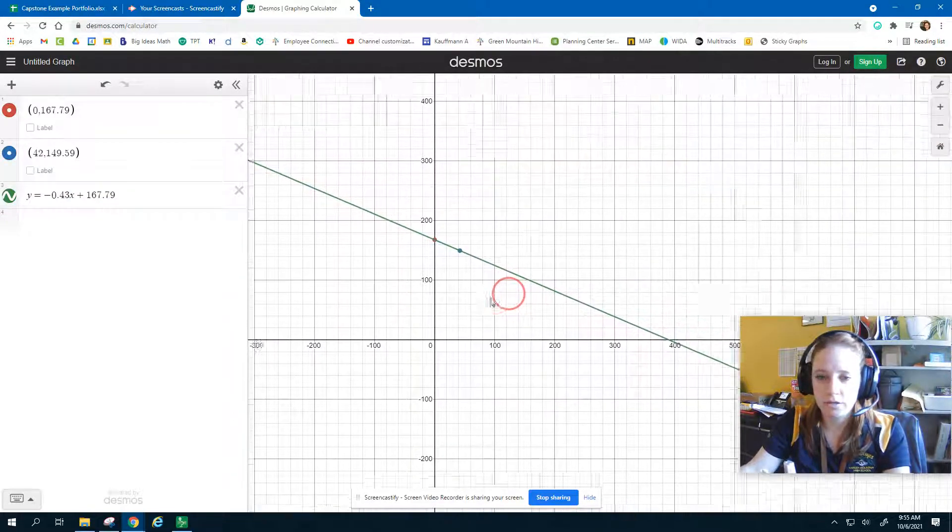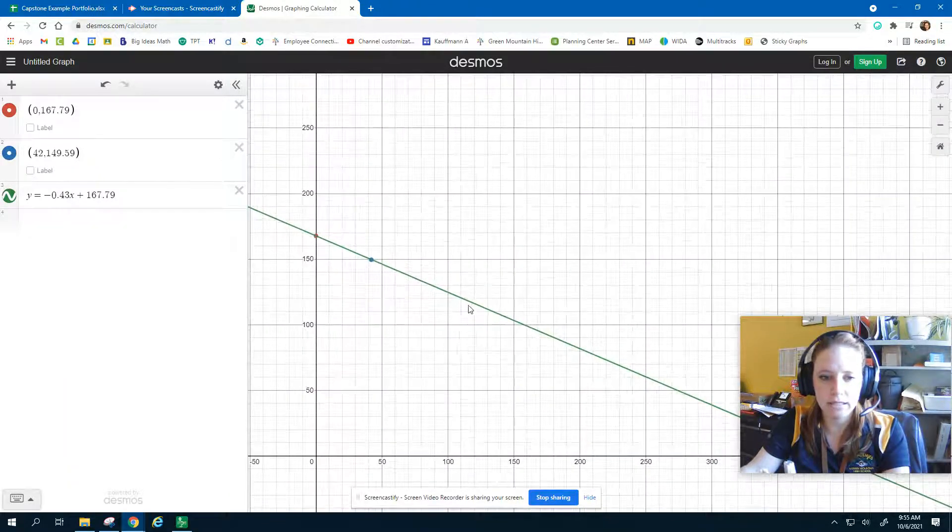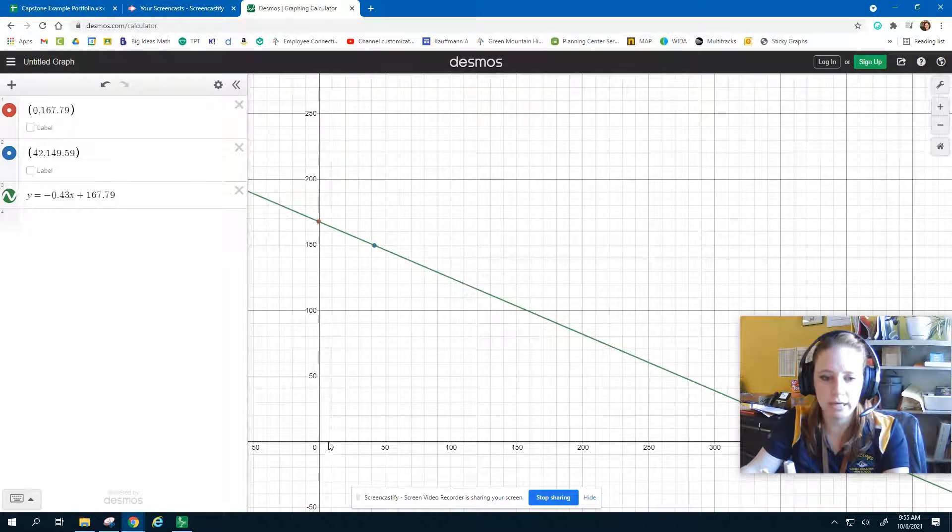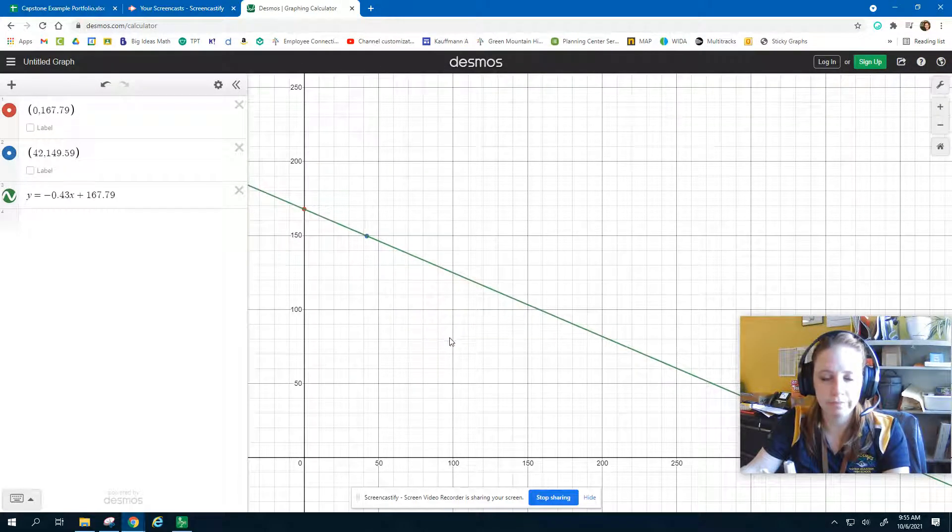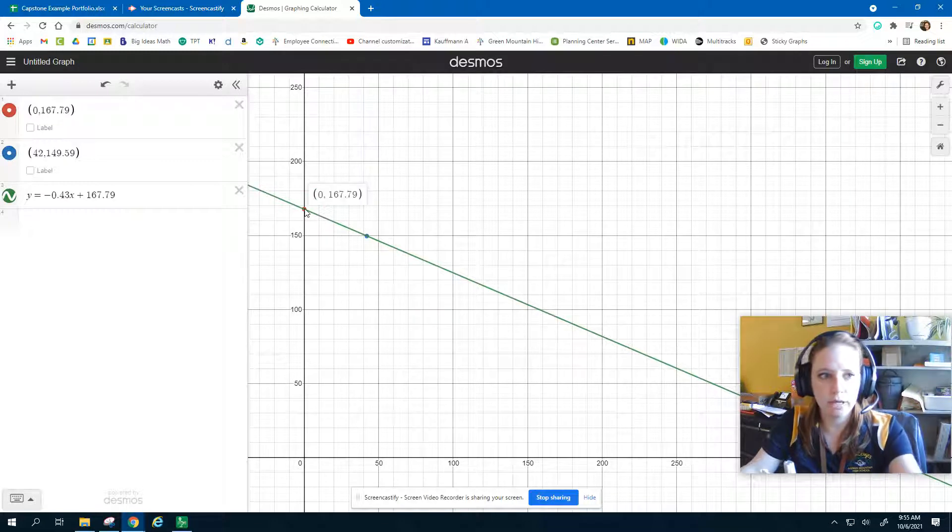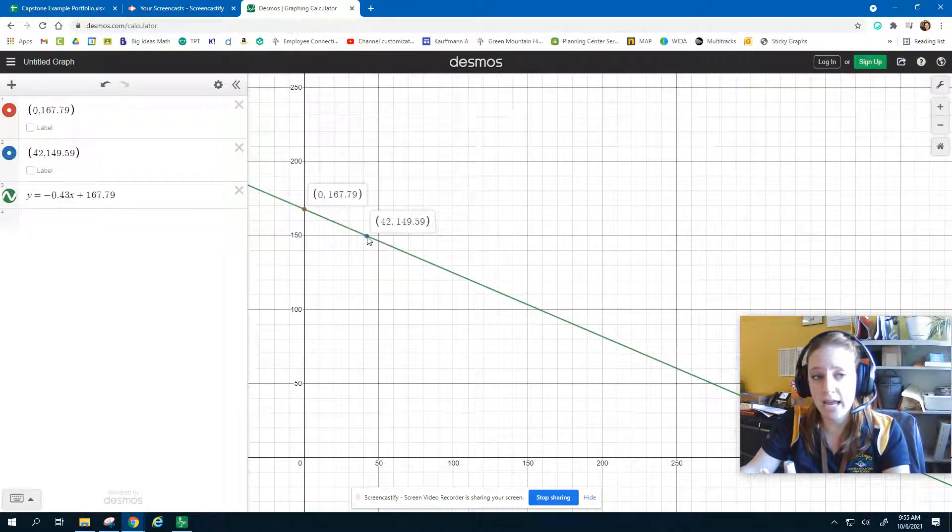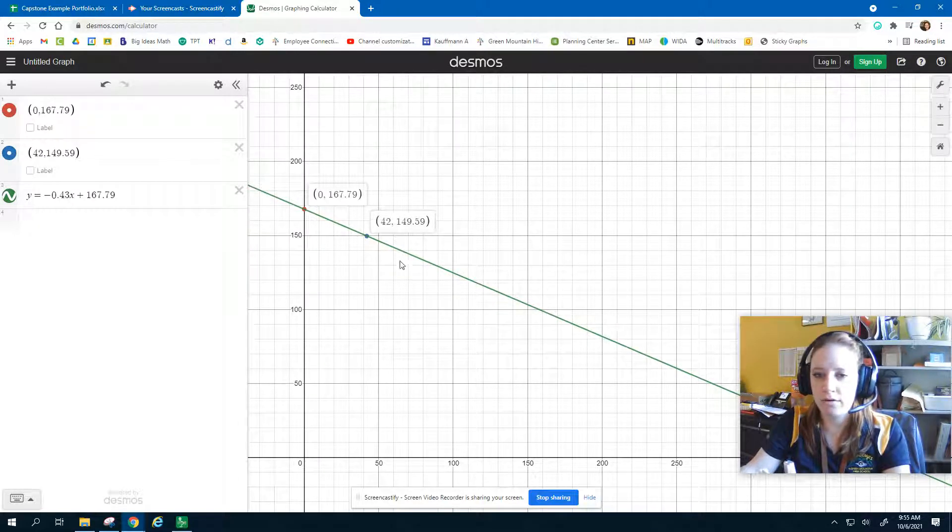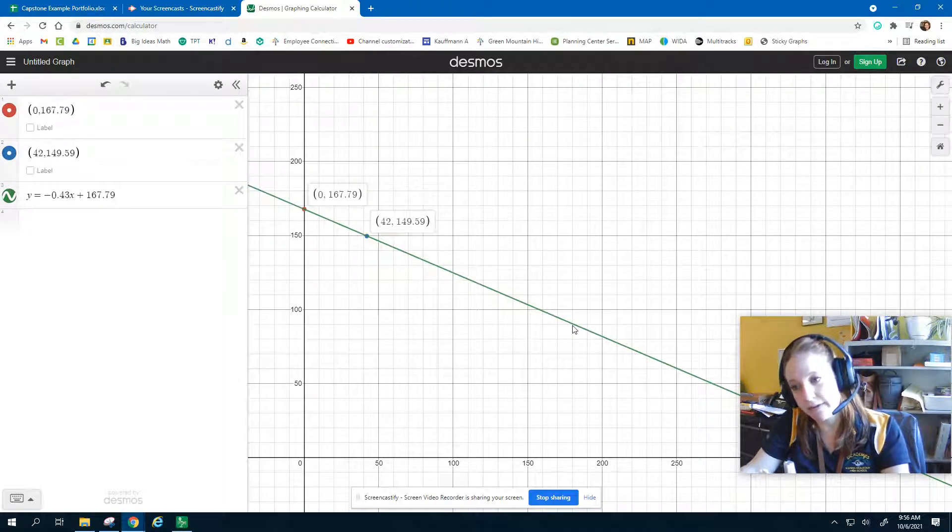There it is. Drag it over, and we're only interested in the positive coordinates here, so we can zoom it in so that 0, 0 is in the bottom left-hand corner. Here's our first coordinate point, 0, 167.79. Our second coordinate point, 42, 149.59. And this green line represents our model, our linear equation. It's declining over time.